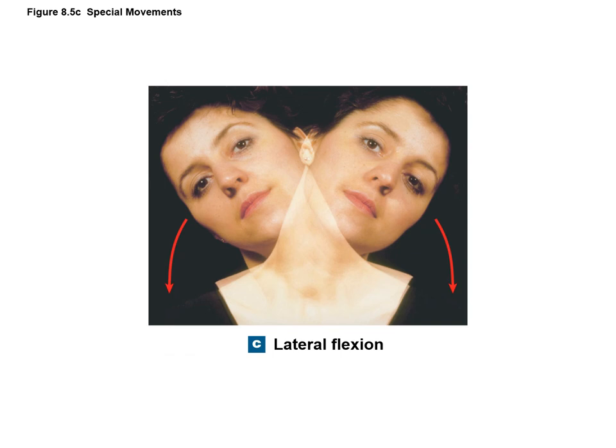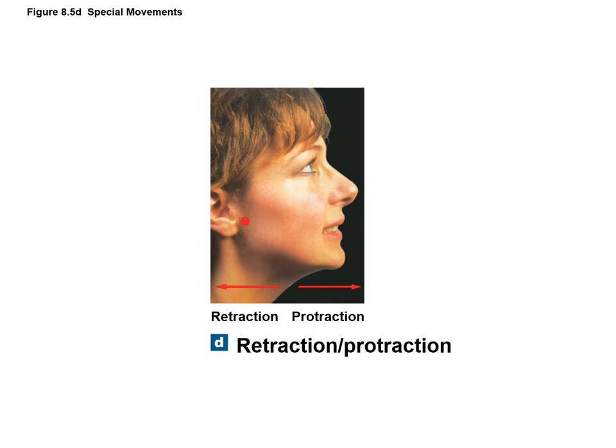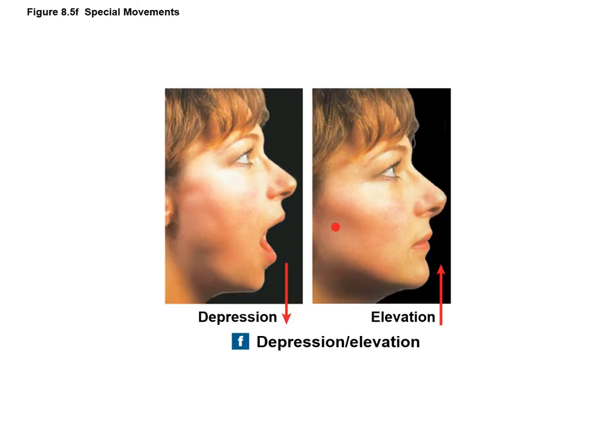Lateral flexion is bending the vertebral column from side to side. Protraction is movement of a joint anteriorly in a horizontal plane—for example, sticking the jaw forward or pushing the scapula forward and rounding the back. Retraction moves the joint posteriorly, pulling the bone back into position. Elevation moves a structure superiorly—shrugging the shoulders up or closing the jaw. Depression moves the joint inferiorly—opening the jaw or pushing the shoulder blades down.